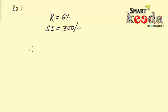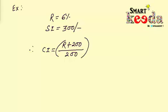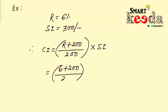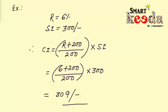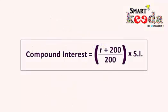Therefore the compound interest for two years = (R + 200) / 200 × SI. Putting in the values: (6 + 200) / 200 × 300, and by solving it we get 309 rupees. That's the answer — wasn't it simple?